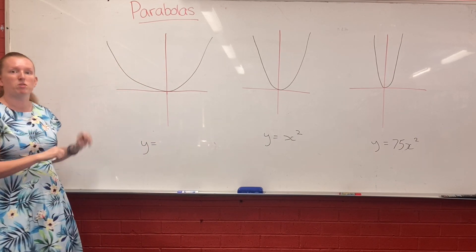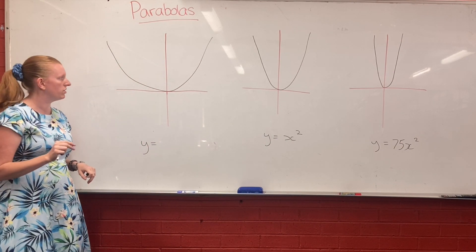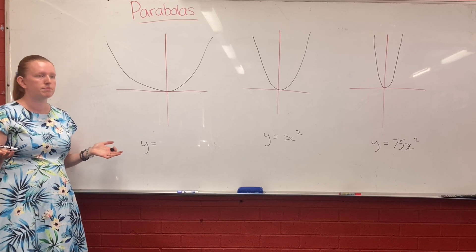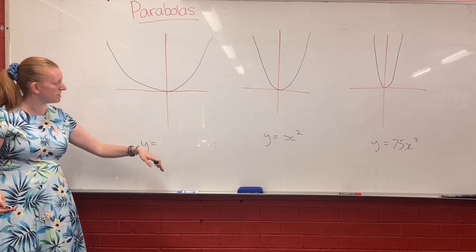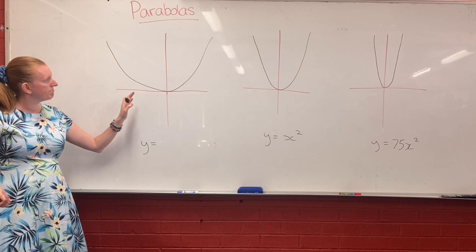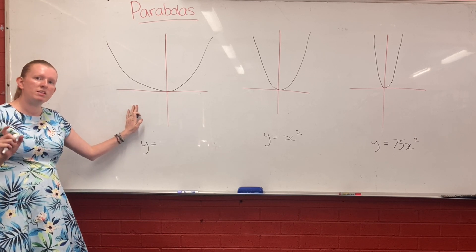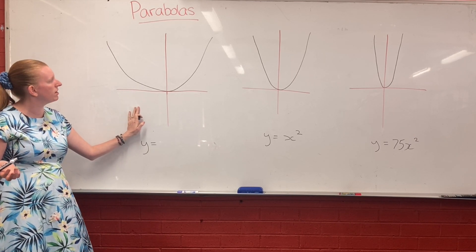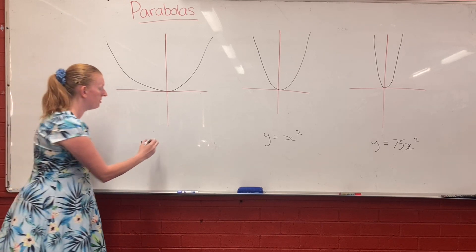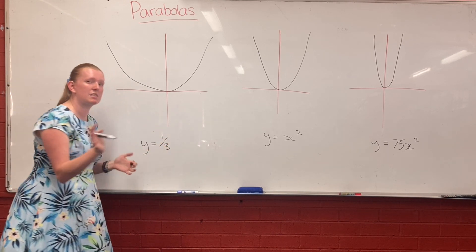Here, it has to be a really small number. So, it's got to be bigger than zero, otherwise it would be negative and it would be flipped upside down. Yeah, but it's got to be between zero and one, so maybe it would be, I don't know, one-third or a decimal of some kind.